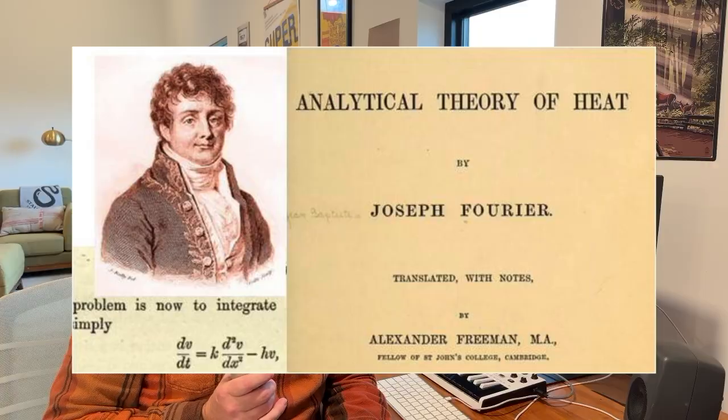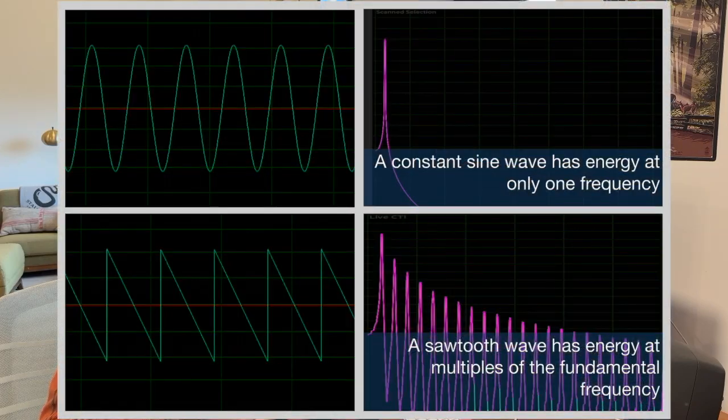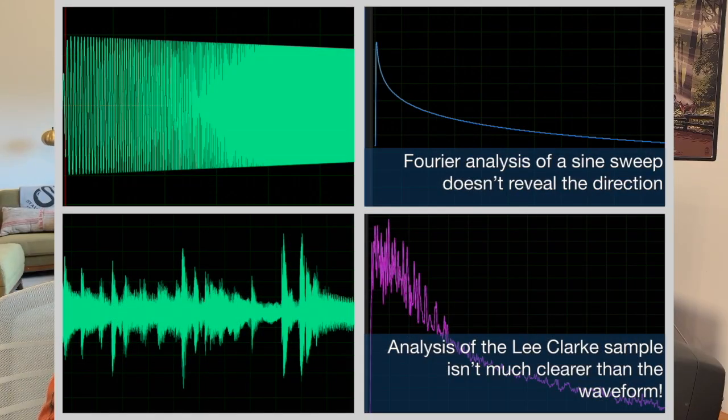One of the most important breakthroughs in our understanding came from Joseph Fourier in the early 1800s. Fourier discovered that any complex vibration can be represented as the addition of simple sine waves. This unlocked the ability to analyze sound in terms of frequency. But Fourier analysis reveals only a clear picture for steady, unchanging sounds. Real-world sounds change continuously over time. So the question became: how do we analyze frequency as it evolves through time?